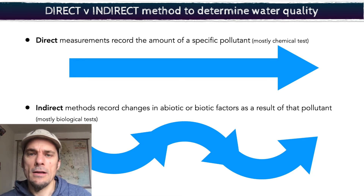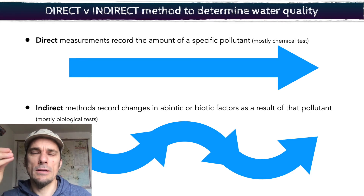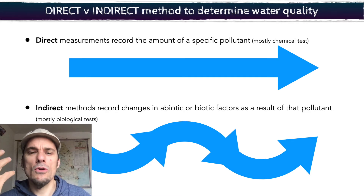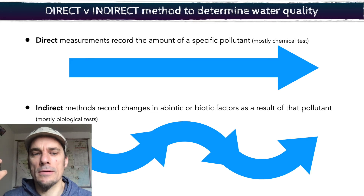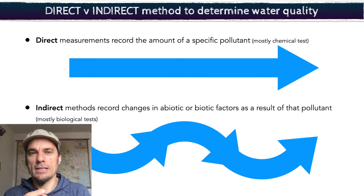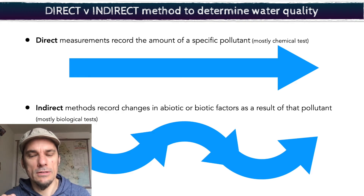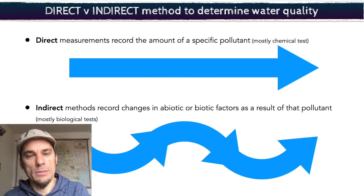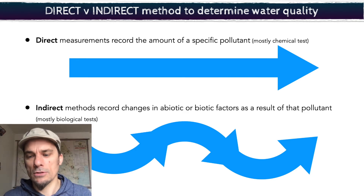A direct measurement means you can measure something to record a specific pollutant. Usually these are chemical tests and you'll see exactly the amount of the pollutant in there. An indirect test will tell you about the environment, and that environment will indicate what's going on in the water — so it's not a direct measurement of the pollutant itself. For example, measuring how many of a certain type of invertebrate bug lives in that water: if you find leeches, it means it's really polluted. I don't know the exact pollution or how much of it's in there, but if I find a lot of leeches I know the water is polluted. That's an indirect measure.